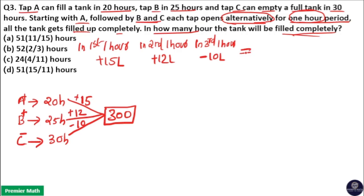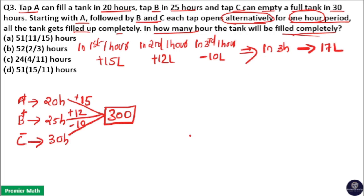In total three hours — first, second, third — the amount filled is 15 plus 12 minus 10 liters. That is 17 liters is filled in three hours.